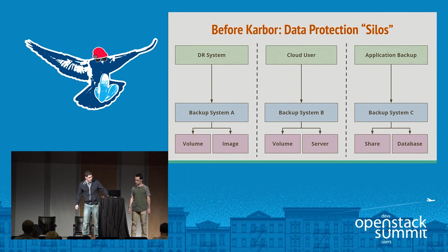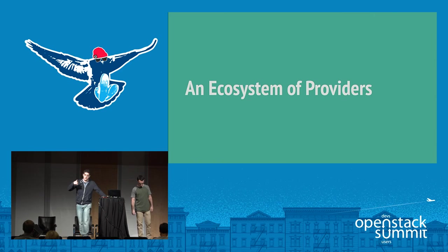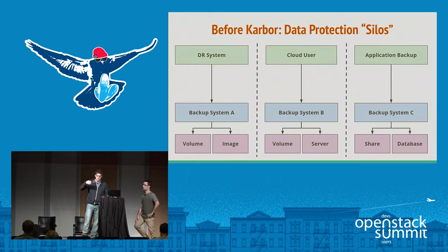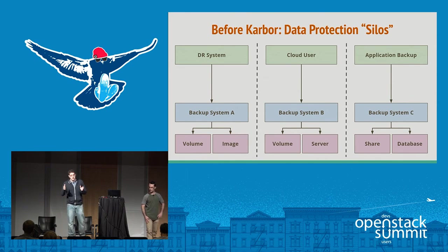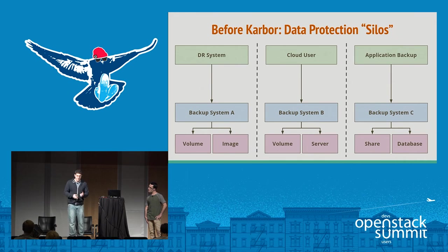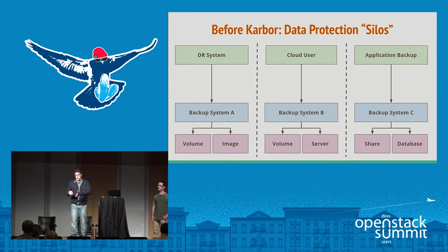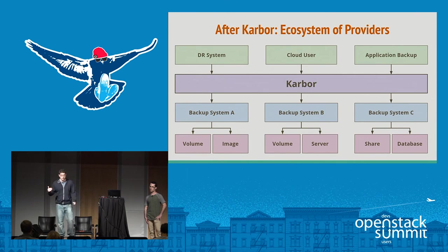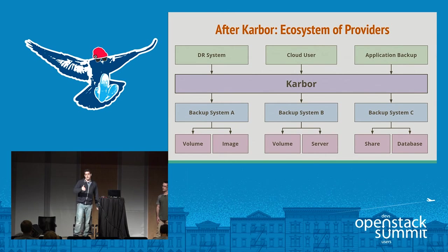To sum up so far: we've talked about our goals and how we use protectables and checkpoints inside the bank. Now let's look at the architecture. Currently you have backup systems that already exist, disaster recovery systems looking at volumes and images, and application backup solutions like database replication or filesystem replication — but they're all managed by different people and not part of a unified plan. That's where we want to be: all different users configuring all different backup plans into a single unified protection solution.